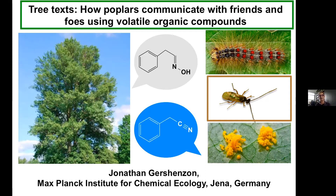Around the end of the 1980s, technology for trapping compounds in headspace in a sensitive way started to be developed and released to the scientific community. This technology was originally developed by people working with air pollution. In the early 90s it became very cheap, and we also got very sensitive GC mass spectrometers. Suddenly there was a real gold rush of doing science and looking for volatiles in plants.